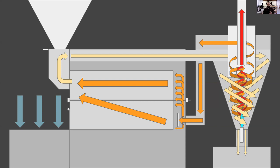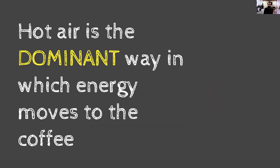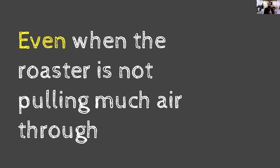Hot air is nearly always being pulled through to help roast the coffee. Hot airflow is in fact the dominant way heat transfer happens in modern coffee roasting systems. Conduction is there but not nearly as quick and efficient. Convection — that hot airflow — accounts for somewhere between 70% and 80% of heat transfer, though it's roaster-dependent. It's significant to know convection is dominant even when the roaster isn't pulling much air.